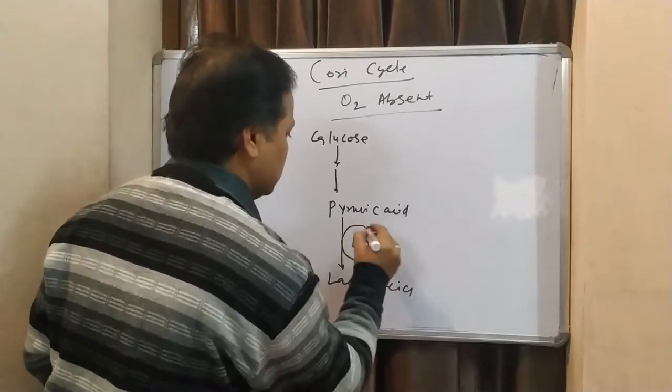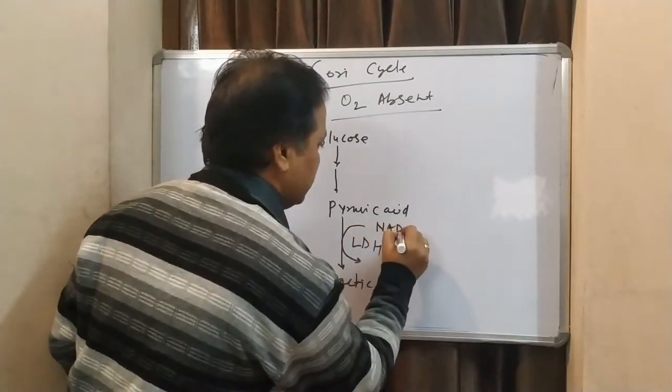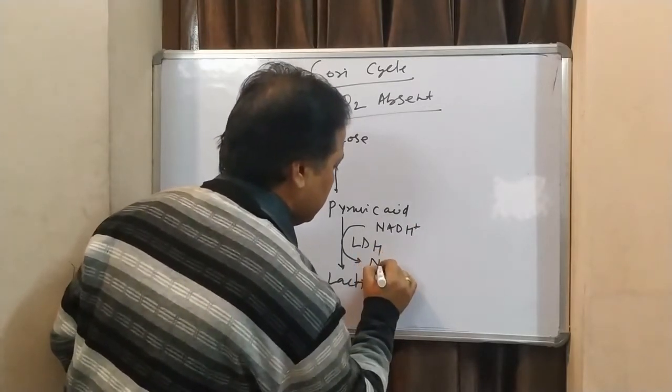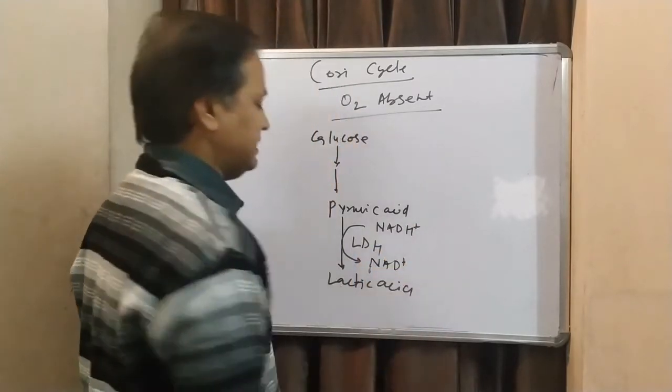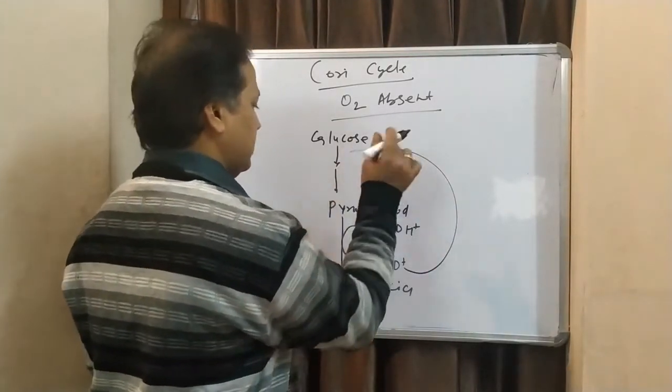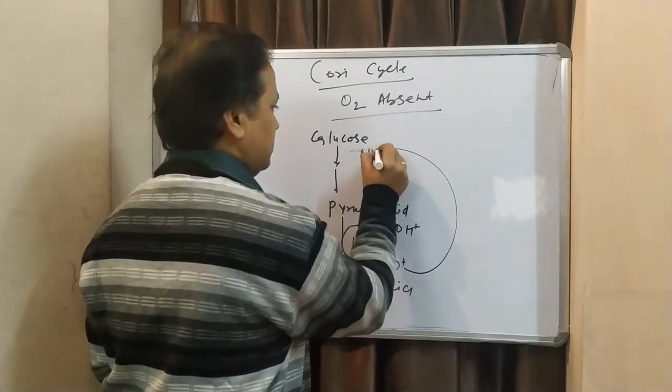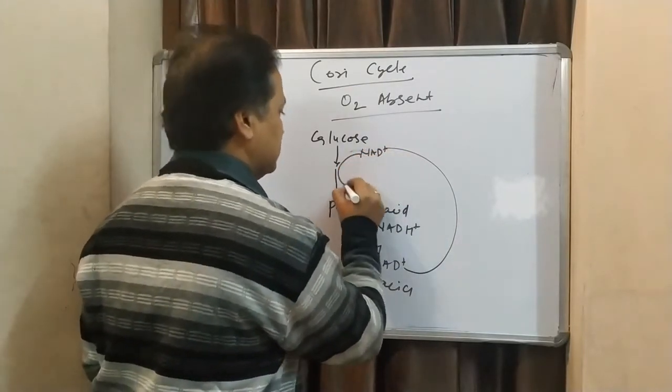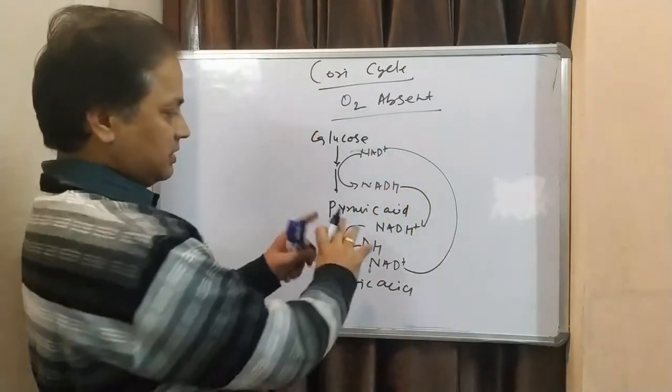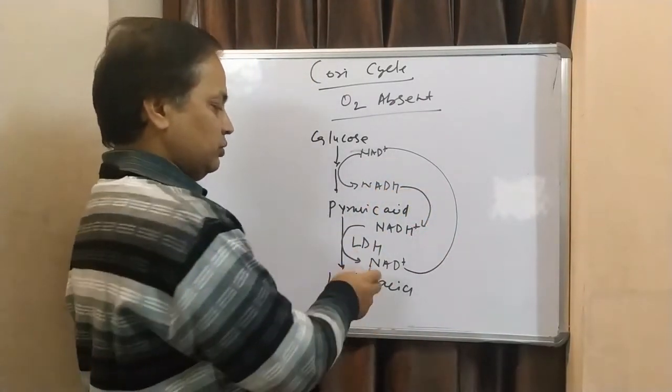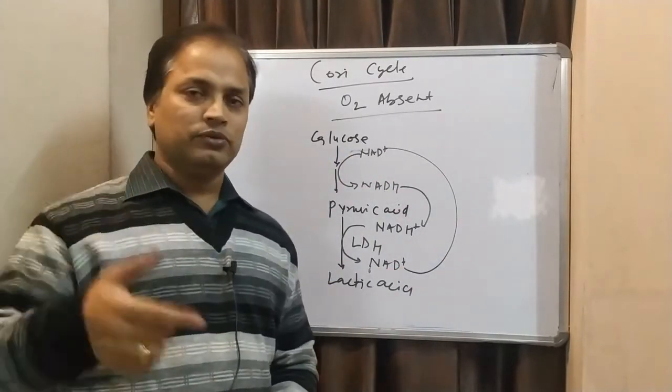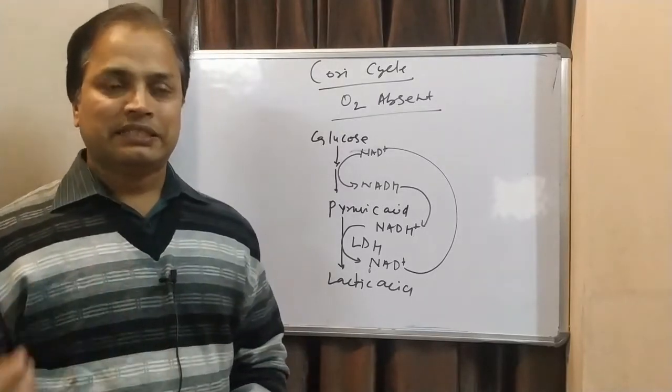In this process, NAD+ will be used and NADH will be regenerated. This NAD+ will be utilized here during the glycolysis process, which gives you NADH. Normally, this reaction occurs just to regenerate NAD+ so that this NAD+ can be used in the glycolysis. So, continuously, glycolysis should occur.